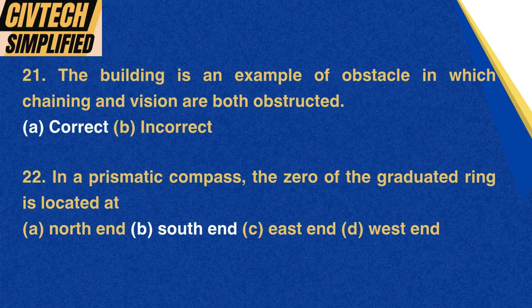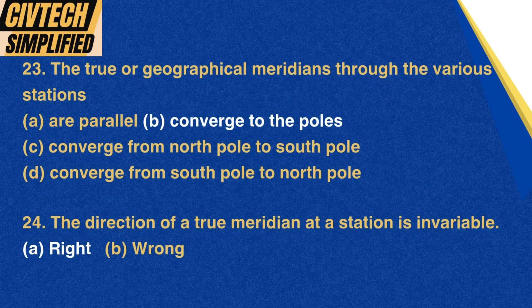Question 22: In a prismatic compass, the zero of the graduated ring is located on the left-hand side of the: A. North end, B. South end, C. East end, D. West end. Correct option: B. South end. Question 23: The true or geographical meridians through the various stations: A. Are parallel, B. Converge to the poles, C. Converge from North Pole to South Pole, D. Converge from South Pole to North Pole. Correct option: B. Converge to the poles.